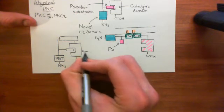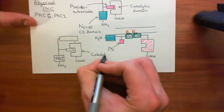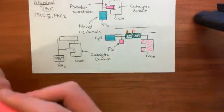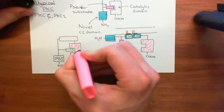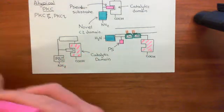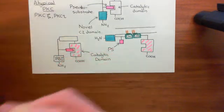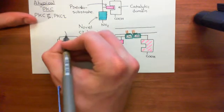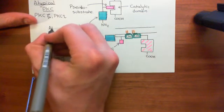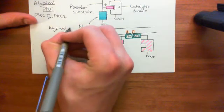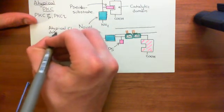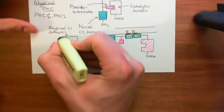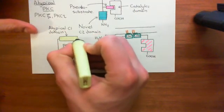Let's label up the portions. We've got the catalytic domain, which phosphorylates serine and threonine residues when the pseudosubstrate — labelled PS — isn't blocking its activity. This special domain is known as the atypical C1 domain. What's atypical about it is that it does not bind to diacylglycerol molecules, which means these atypical protein kinases are not going to be activated by diacylglycerol molecules.